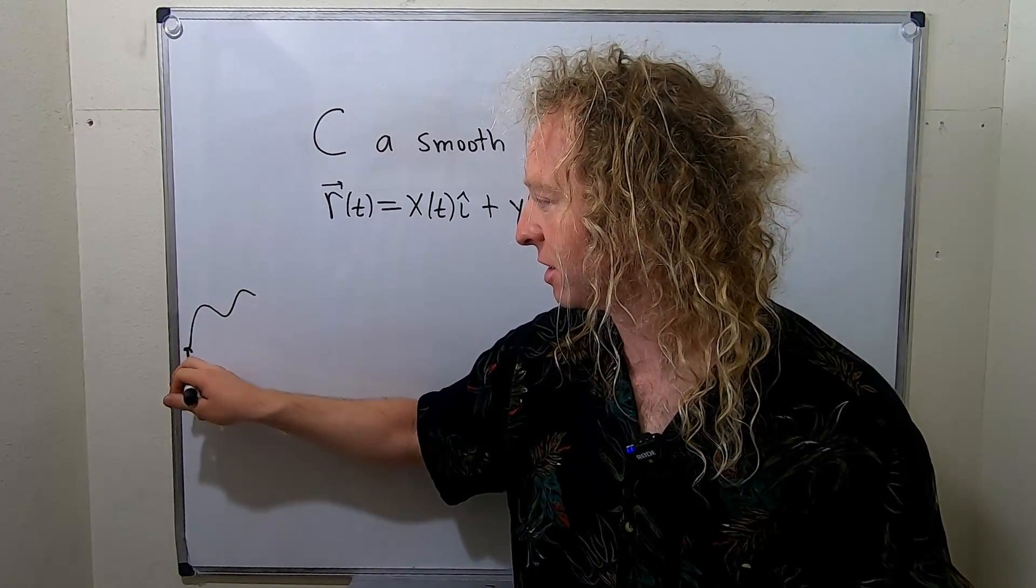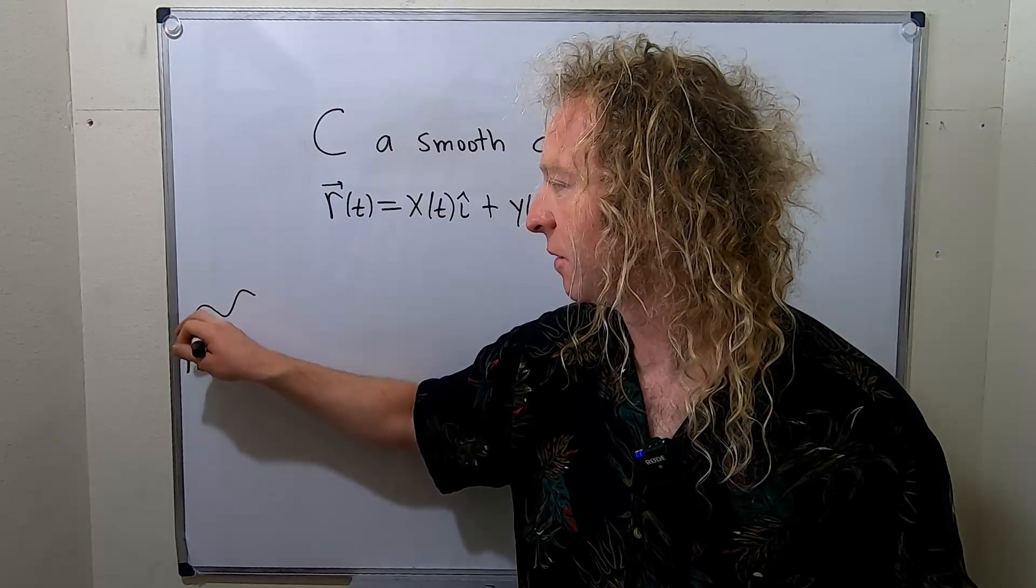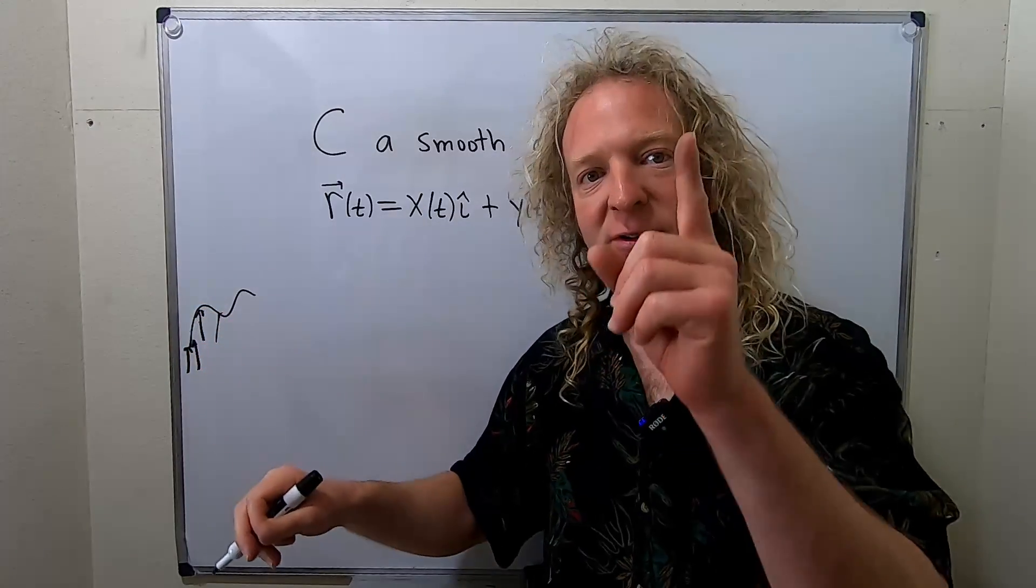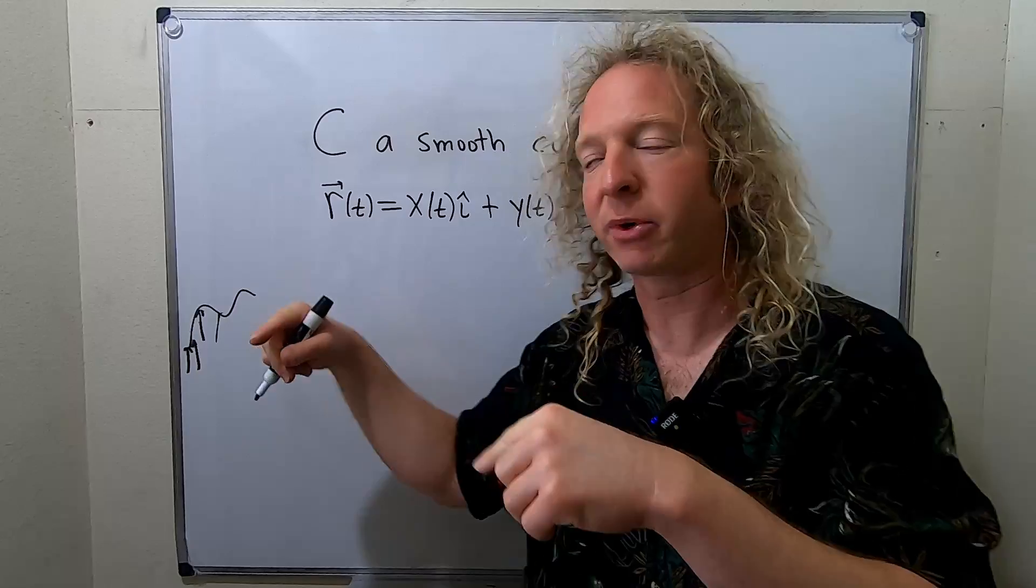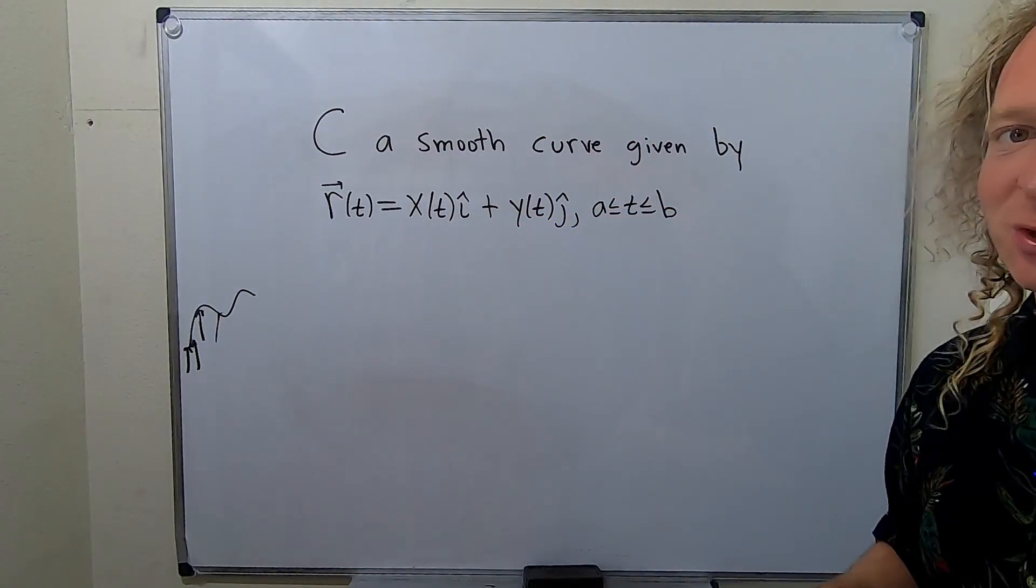So you can think of this curve as the collection of the endpoints of the vectors. You have vector, vector, vector, vector, vector, and it traces out some curve, in this case in two-dimensional space.